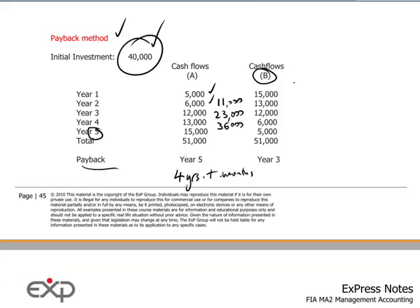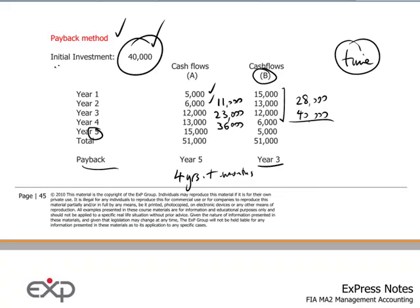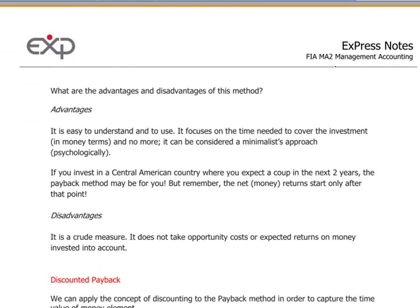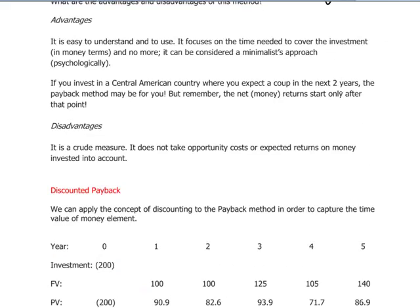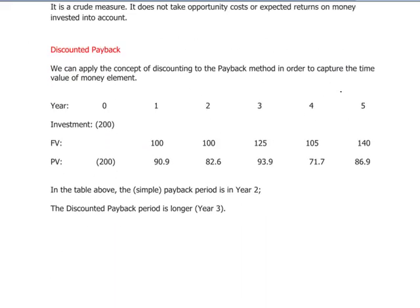For project B, where the cash flows are coming in quicker up front, the 40,000 is recovered after three years. That's 15,000 plus 13,000, making an accumulation of 28,000, and then by the end of the third year, another 12,000 is recovered, giving us exactly 40,000. So the payback method is measuring the amount of time necessary for the cash flows to add up to the initial investment, and one can see the advantages and disadvantages of the payback method summarized here.